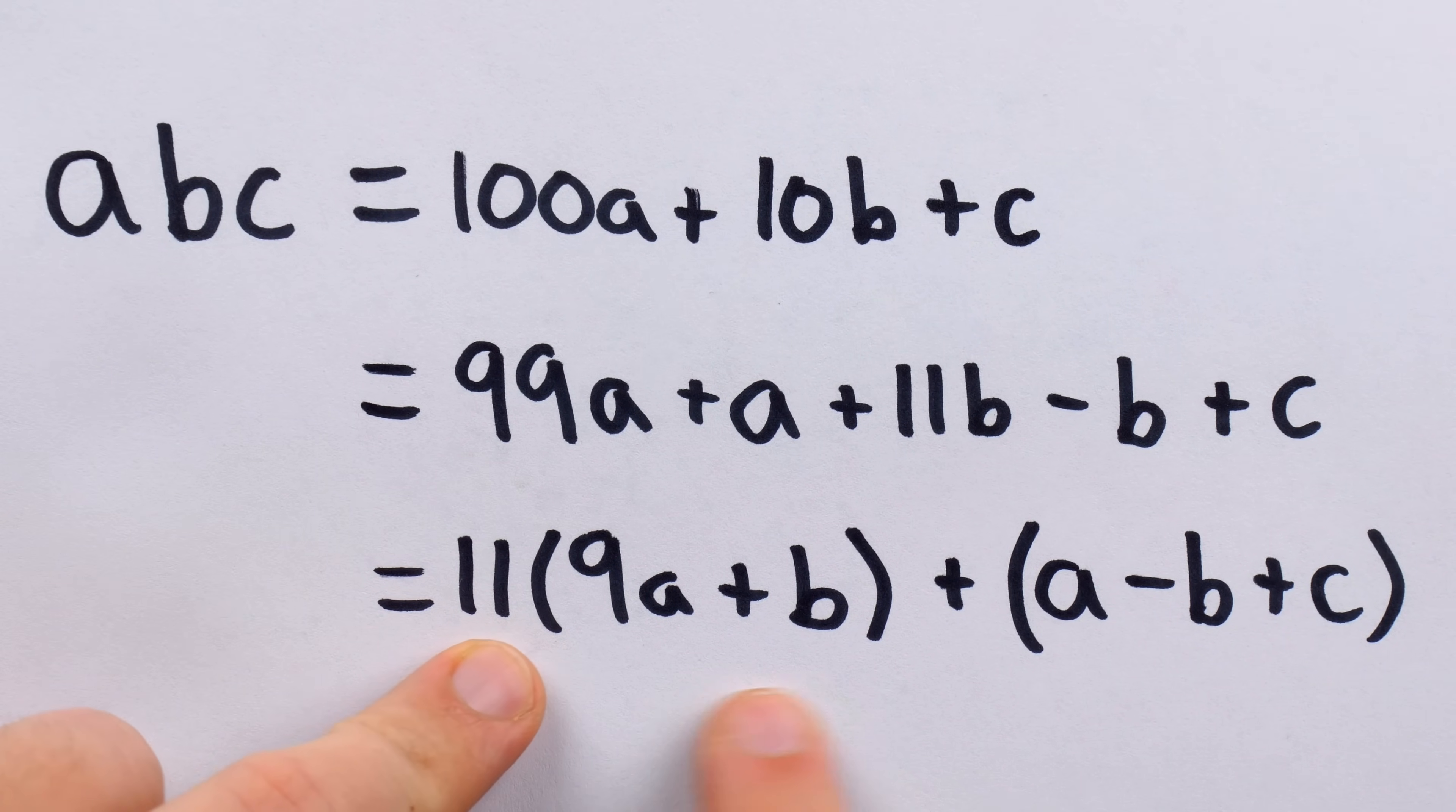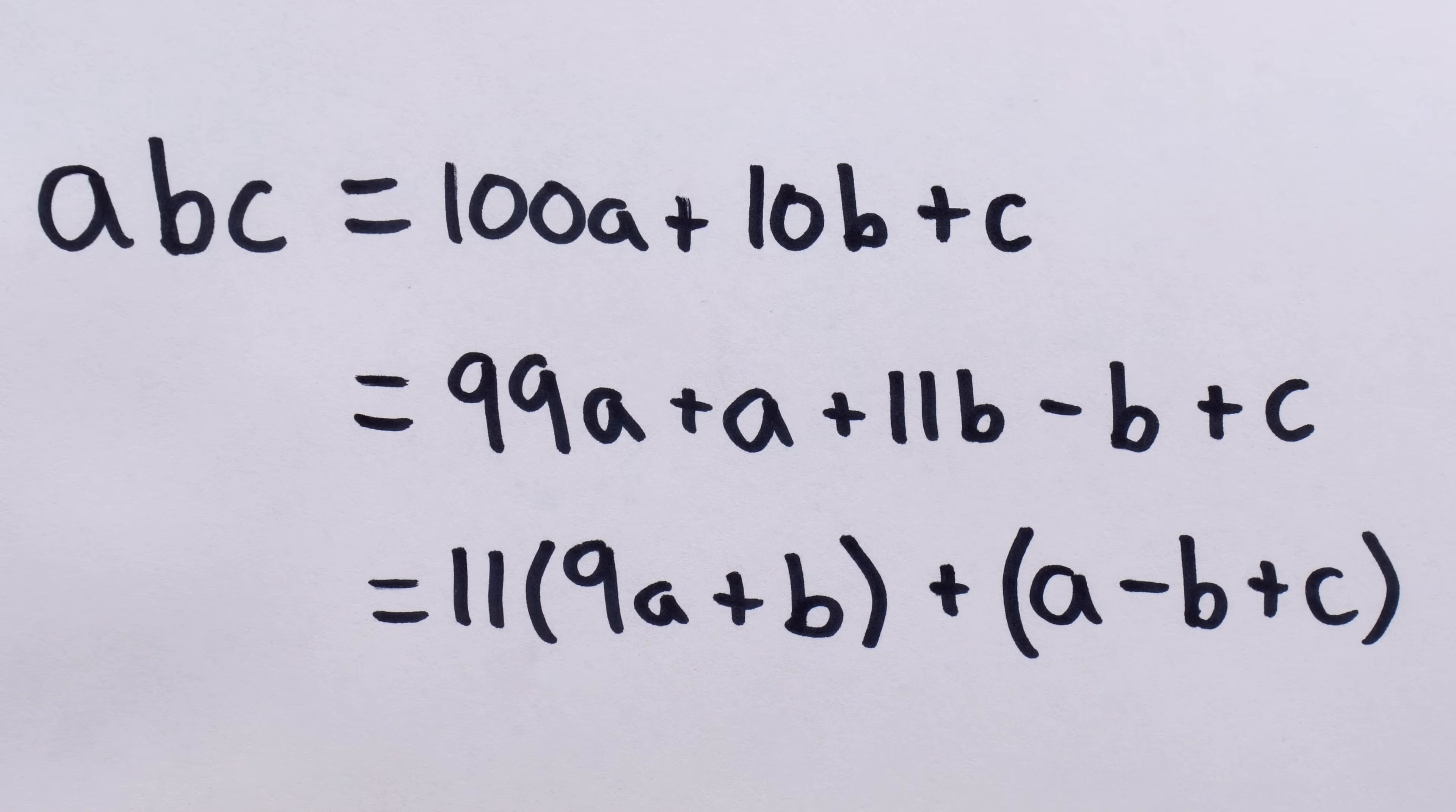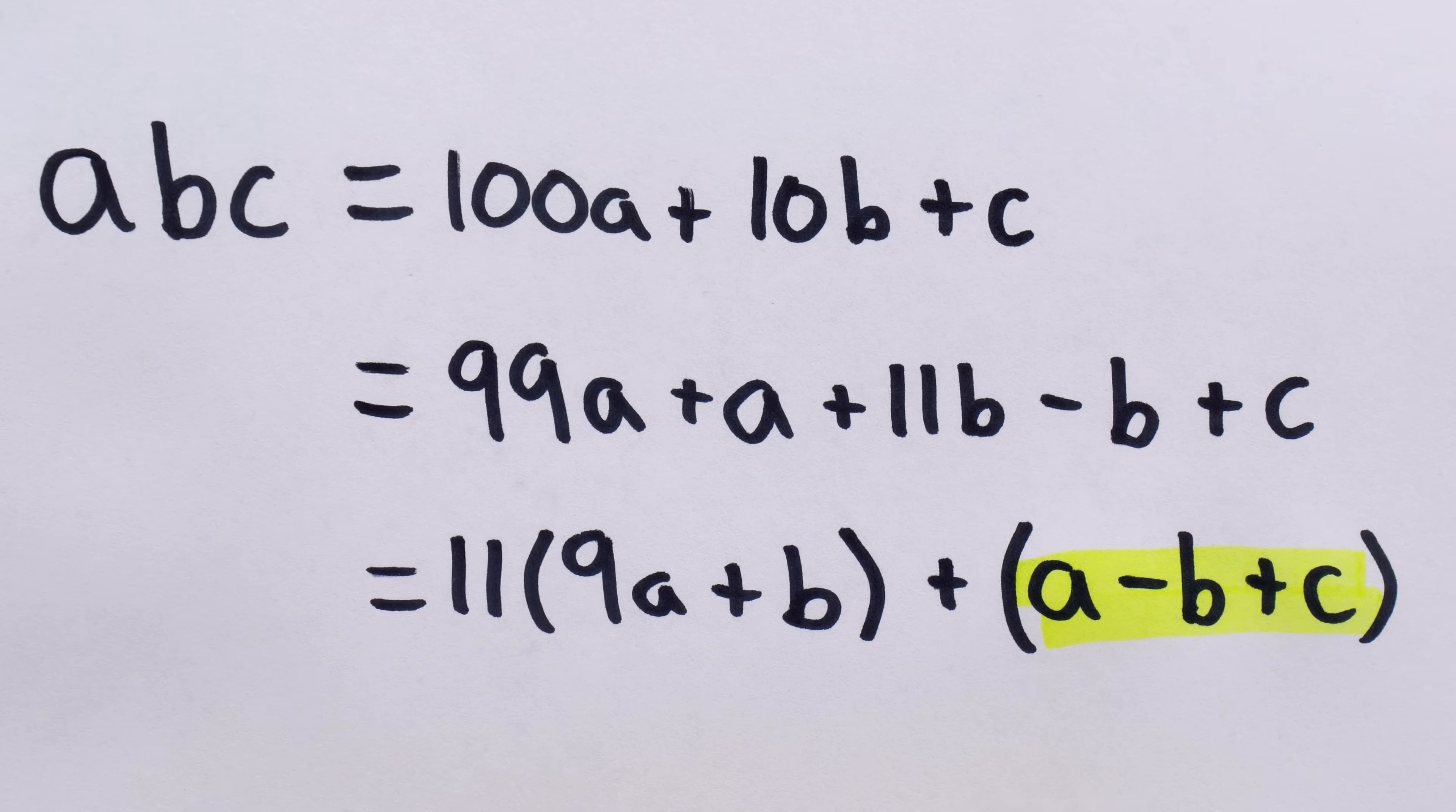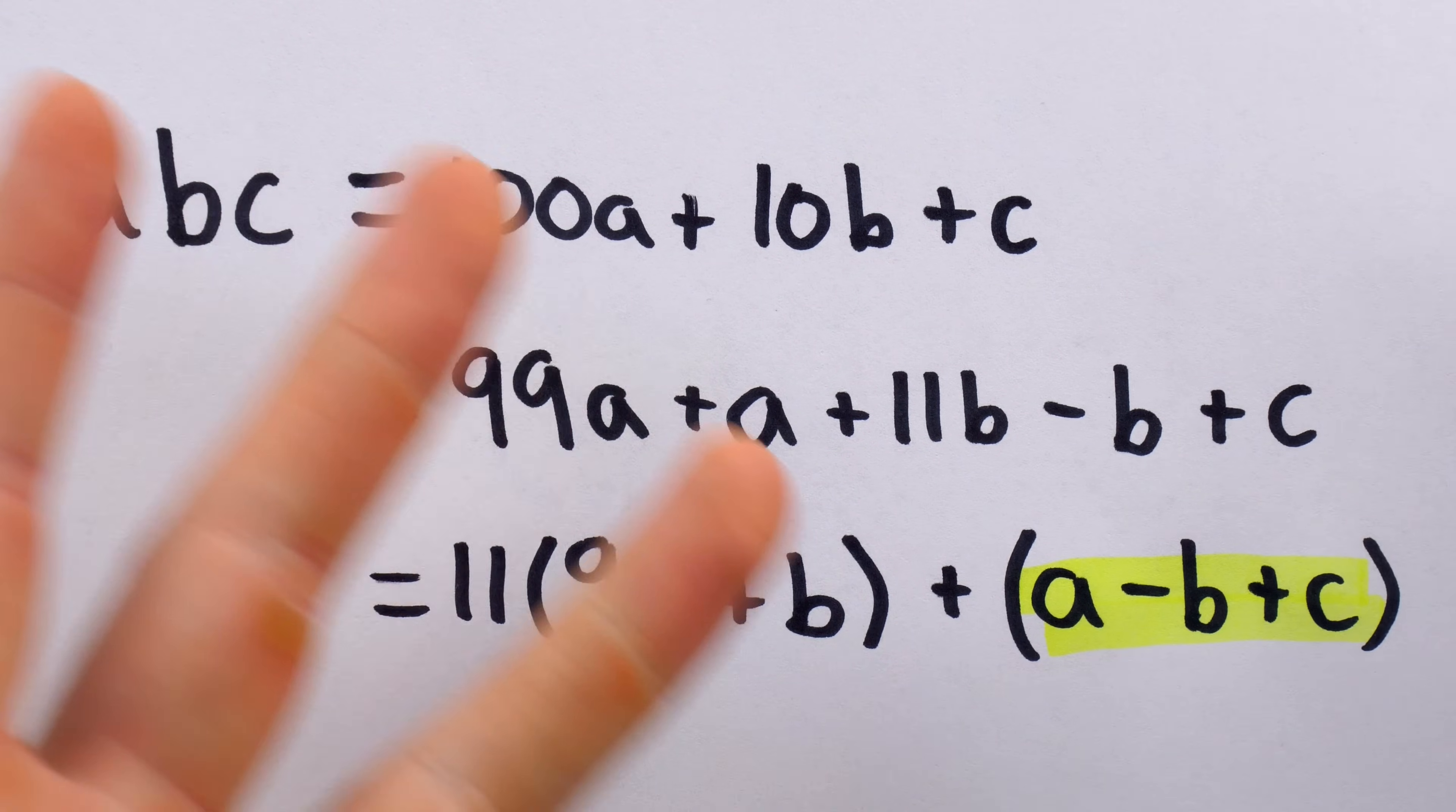So then we see that this part clearly is a multiple of 11. So in order for this three digit number to be a multiple of 11, it will be necessary and sufficient that the alternating sum of the digits A minus B plus C is itself a multiple of 11. And a similar argument can be made for numbers with more than three digits.